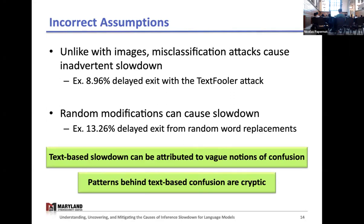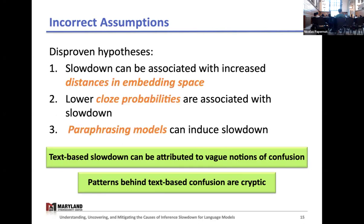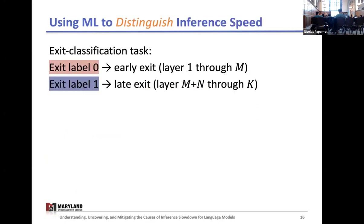We have explored a variety of hypotheses related to patterns that could be linked to this model confusion. Here's a summary of our hypotheses based on intuitions from our understanding of how images work, adversarial attacks in general, and we've even taken inspiration from what we understand about text that's more difficult for humans to process. Since this is such a challenging concept to uncover, we thought: what if a machine learning model can learn this distinction between early and late exiting samples? So we defined this novel exit classification task, a binary classification task where a model tries to predict if an input could exit relatively early or relatively late in a multi-exit model.